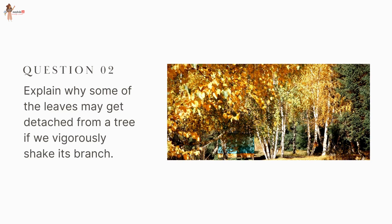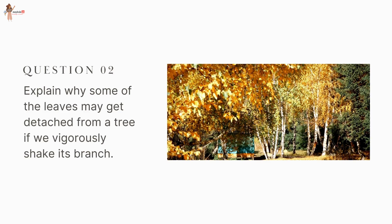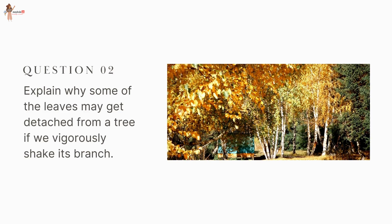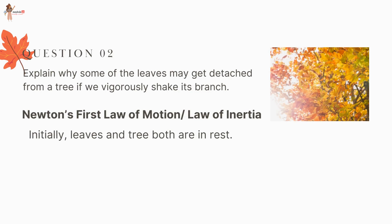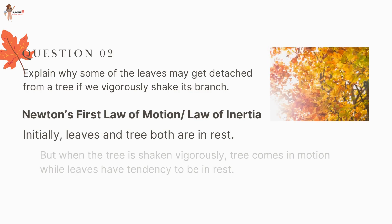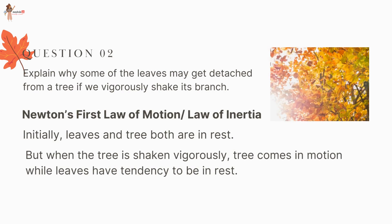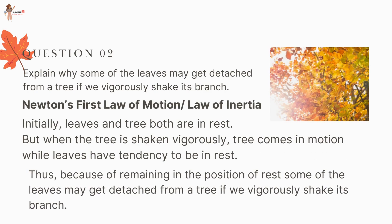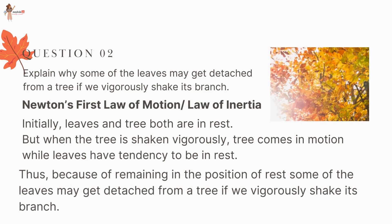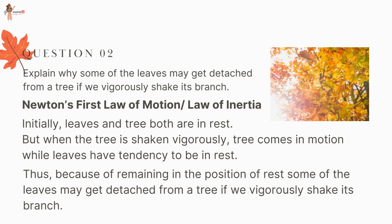Question 2: Explain why some leaves get detached from a tree if we vigorously shake its branch. The answer lies in Newton's First Law of Motion. Initially, leaves and tree are both at rest. When the tree is shaken vigorously, the tree comes into motion while the leaves have a tendency to remain at rest. Thus, because of remaining in the position of rest, some leaves may get detached from the tree.